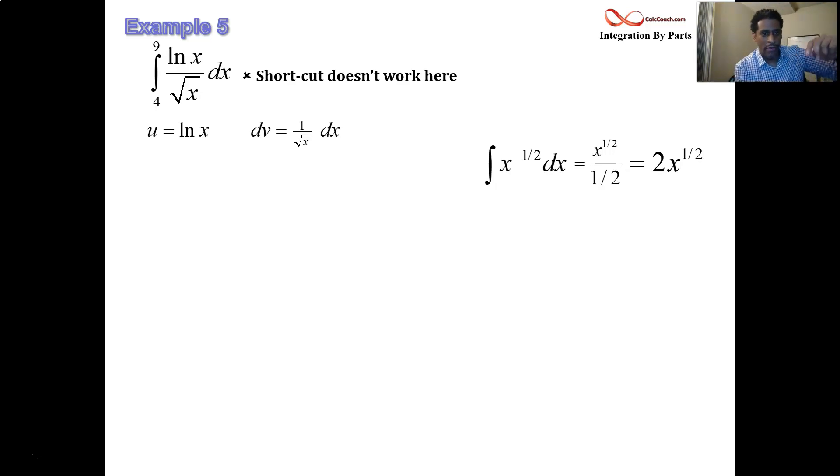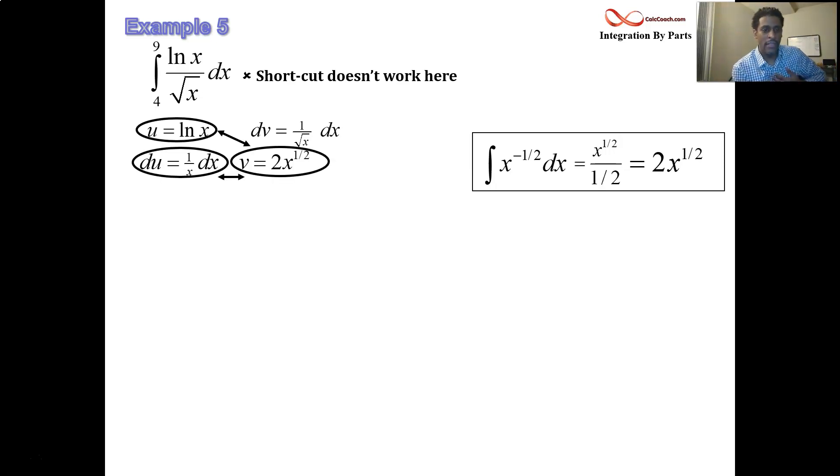All right, great. So now we're ready to go to phase two here. We take the derivative of u and get 1 over x dx. We take the integral of dv, and we get exactly this guy here, 2x to the half. Doing great. What do we do with this? We multiply u and v together, subtract the integral of the product of v and du, using the formula for integration by parts.